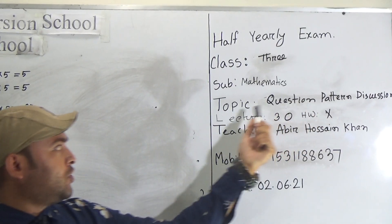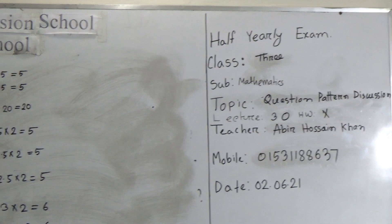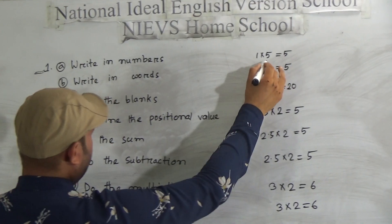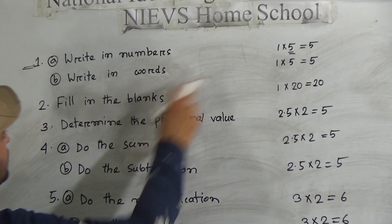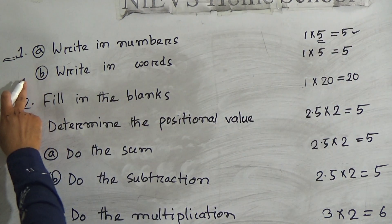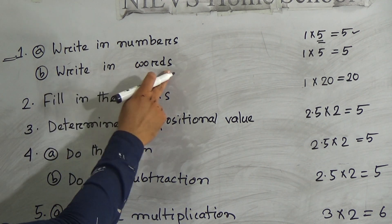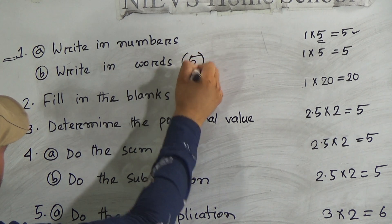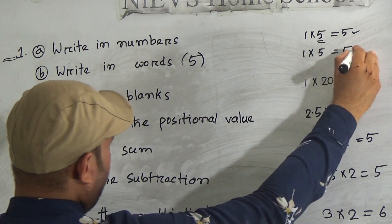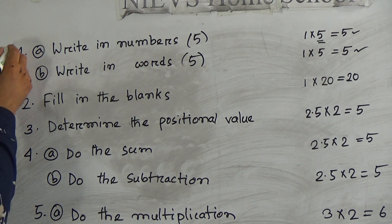Our today's topic is a discussion about the question pattern. We'll discuss the question pattern of your half-yearly exam. In question number one, you have to write in numbers. There are five numbers and each number contains one mark, so five ones are five. Similarly, number B also has writing numbers — five numbers, each containing one mark, so that is also five marks. In question number one, there are ten marks total.